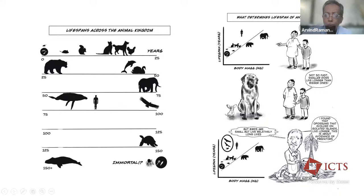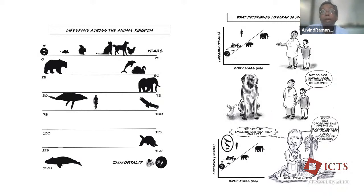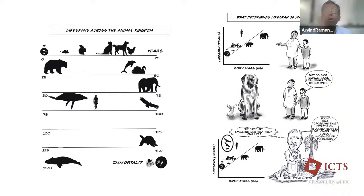There are animals like bats, parrots, and eagles that live far beyond what their body mass would predict. Professor Steve Austad at the University of Alabama looked at opossums that had individually evolved on an island versus the mainland and found that island opossums had about a 20–30% increased average lifespan. This told us it wasn't just physiology — the environment and exposure to predators also regulate lifespan. The answer is not one obvious thing.